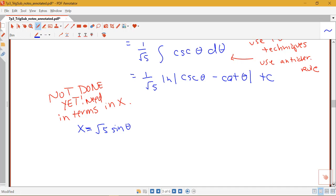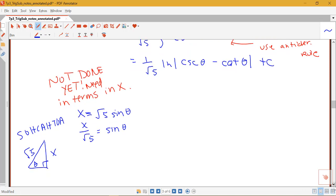And so doing this requires a little bit of right triangle trig. Notice that I have x over root 5 is equal to sine theta. So if I use my SOHCAHTOA and draw a right triangle here, if I have theta here, we know that sine is opposite over hypotenuse. So this would be x over root 5. And I could use my Pythagorean theorem here to get that this side down here is the square root of 5 minus x squared.